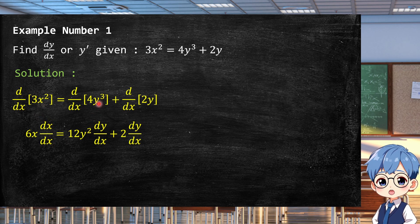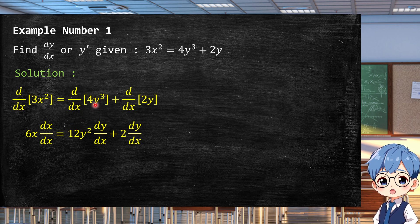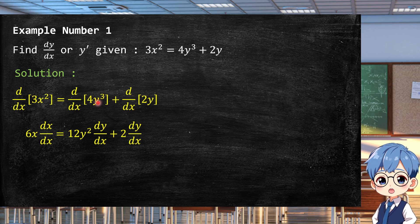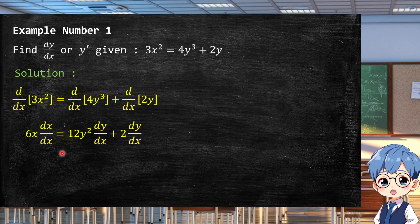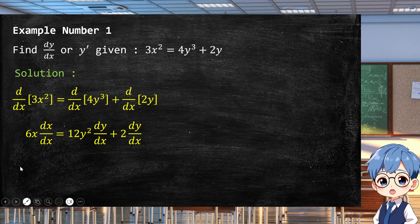For 4y³, using the power rule we bring down 3 and multiply by 4 to get 12, subtract 1 from the exponent to get y², and since the variable is y we have dy/dx. For 2y, the derivative is simply 2, and again the variable is y so we have dy/dx. Then dx/dx equals 1, so we cancel that out.